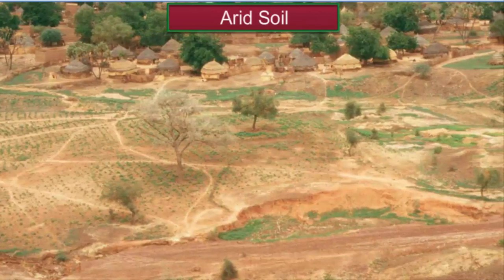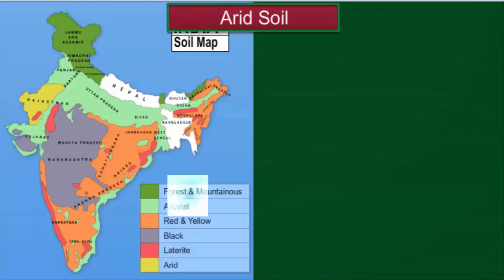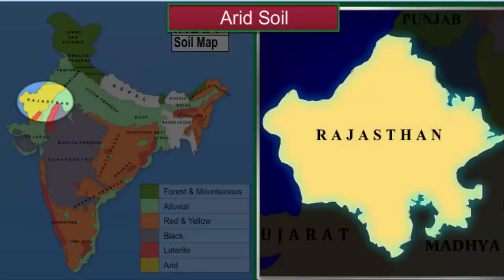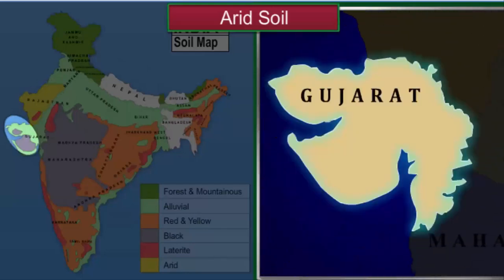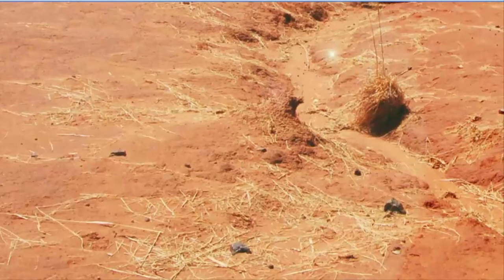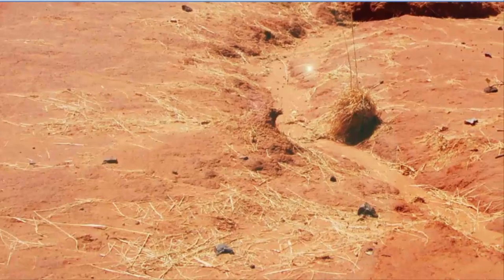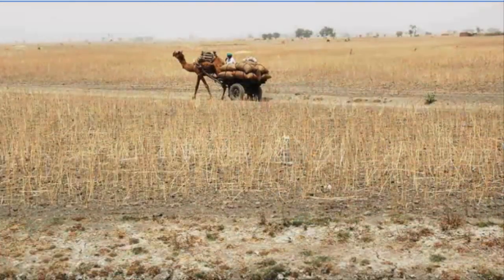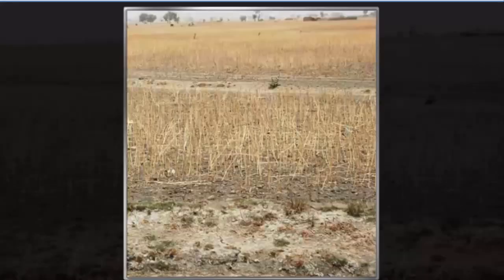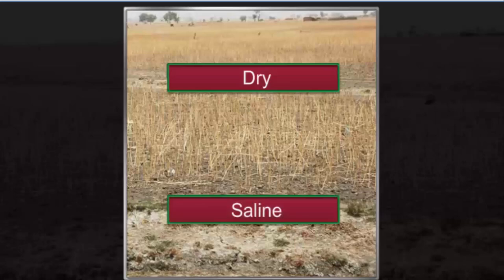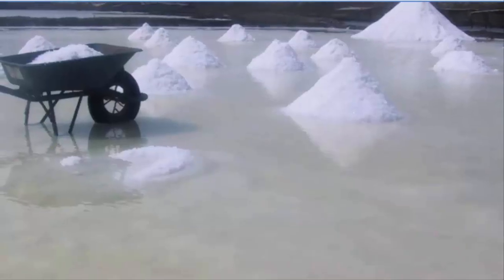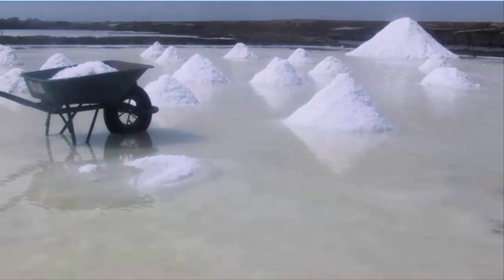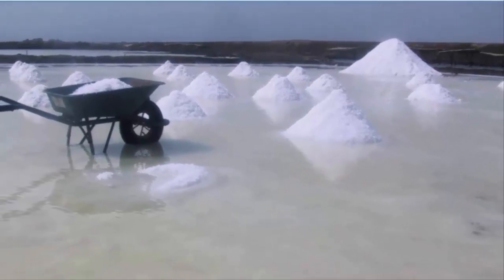Arid soil is found in western Rajasthan and parts of the Kutch region in Gujarat, which receive very little rainfall. It is reddish brown in colour and has a sandy texture. Due to high temperatures and dry climate, arid soil is low in moisture and organic content and has high salt content. The salt content is so high that common salt is obtained by mere evaporation of the water.